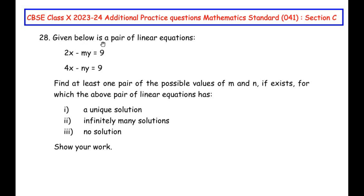Given below is a pair of linear equations: 2x minus my equal to 9 and 4x minus ny equal to 9. Find at least one pair of possible values of m and n if they exist, for which the above pair of linear equations has a unique solution, infinitely many solutions, or no solution. Show your work.